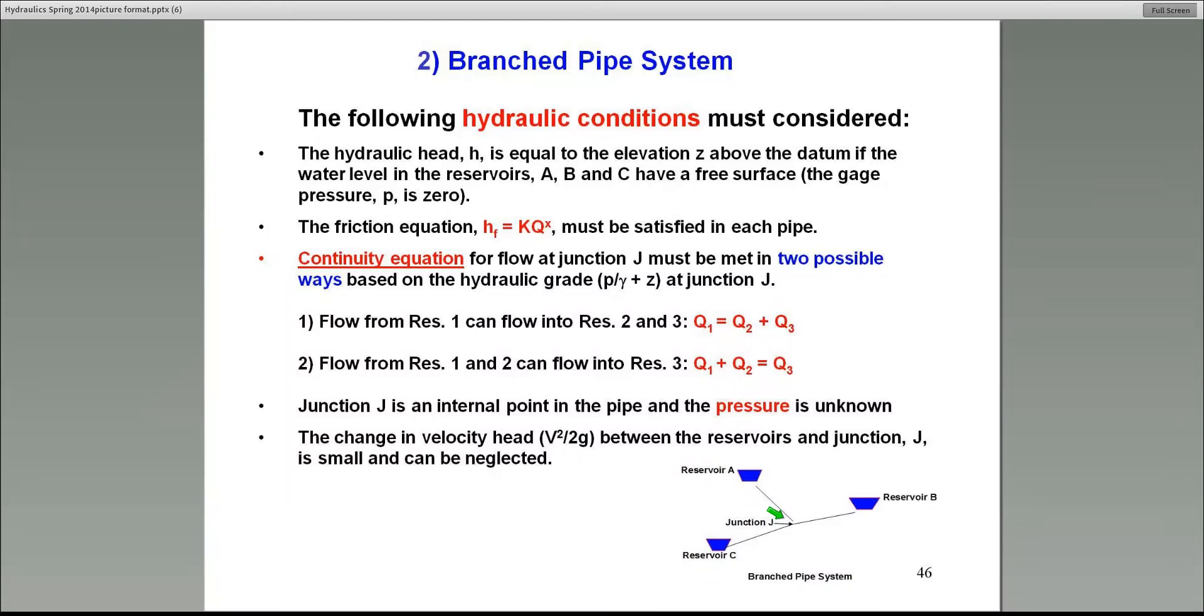Typically in a situation like this, we do not know the hydraulic head or the pressure at junction J. That's an internal point. Normally what we solve for is the hydraulic head at that junction J. In this problem, we have to recognize these are pipes. Their velocity heads are small, so we're going to neglect any changes in velocity head. We'll be working with the hydraulic head or the piezometric head, P over gamma plus Z term. And we'll use the friction equation in this form, which I just talked about earlier.